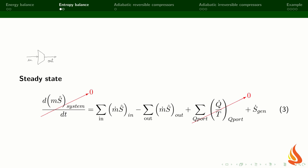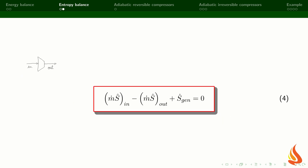Let's take a look at the entropy balance. Because of the steady state operation, the time derivative is equal to zero, and the term that depends on the heat transfer rate is also equal to zero because the process is adiabatic. After cancelling these terms, we obtain equation 4, which contains the entropies of the input and output streams and a term that accounts for the rate of entropy generation.